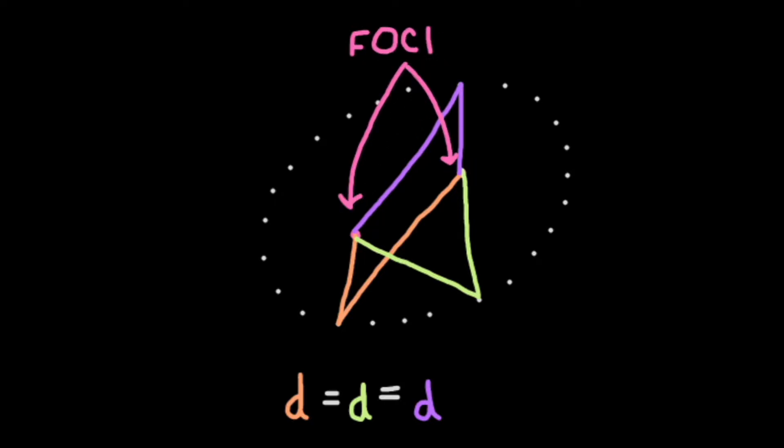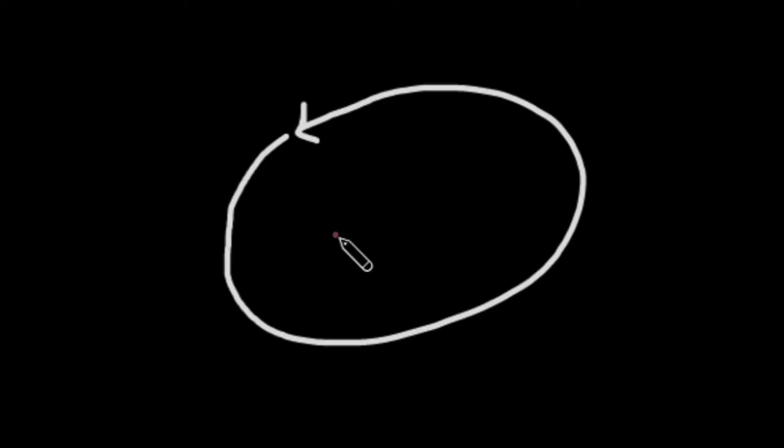When the two points are located at the same place, the ellipse becomes a circle. In the case of moving bodies, planets revolve around a star that is located at one focal point.